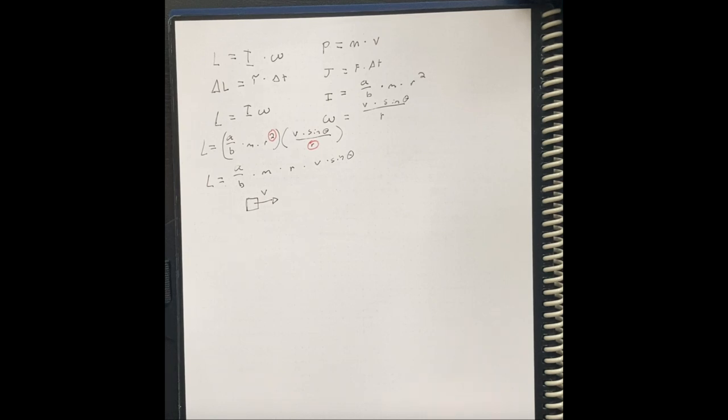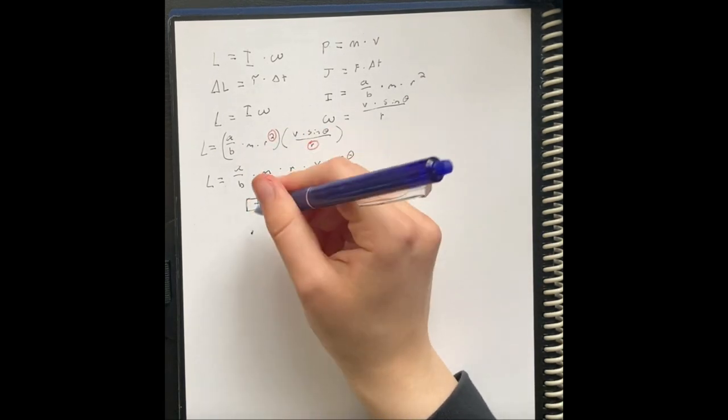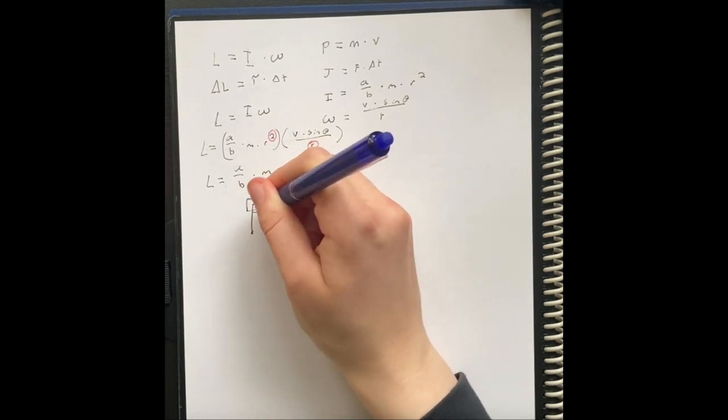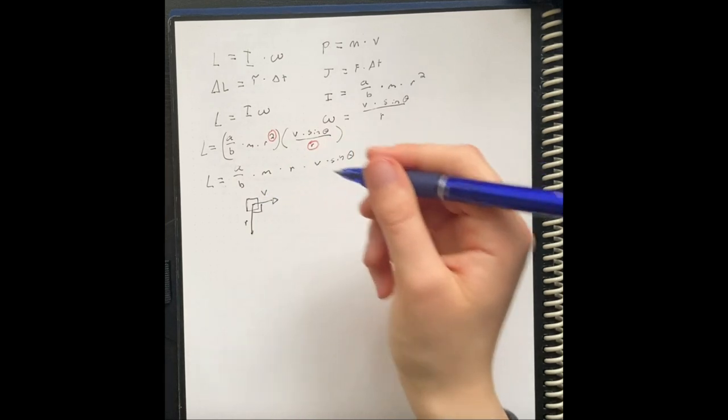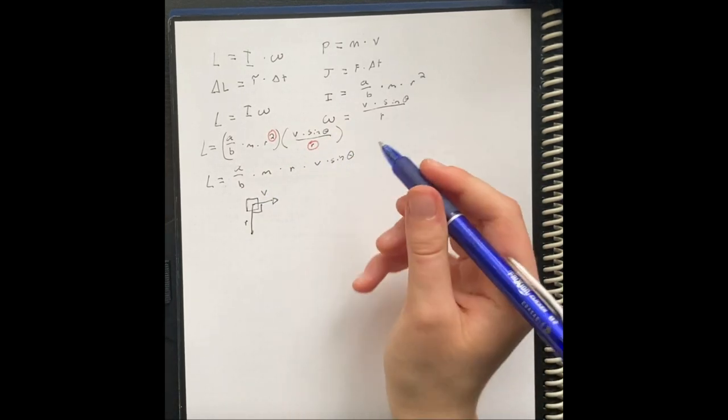So to find angular momentum, we need to have a radius. And for a radius, we have to have a pivot point. So we're just going to pick the easiest one, and that is one that is directly below the velocity vector. And thus, the radius and the velocity vector form a right angle. They are perpendicular. And so there is basically no sine theta. Sine of theta is equal to one.